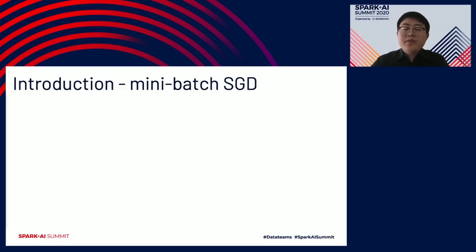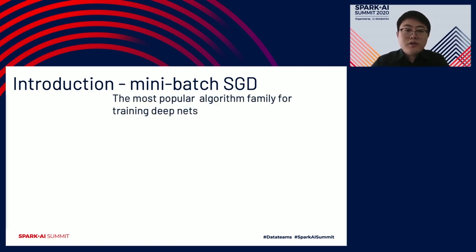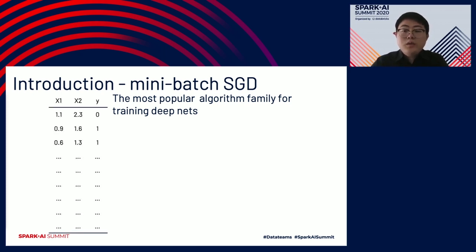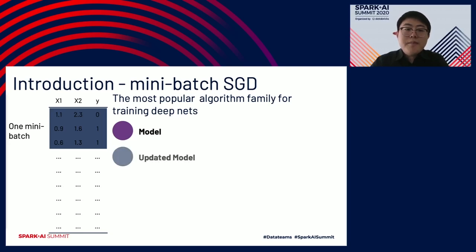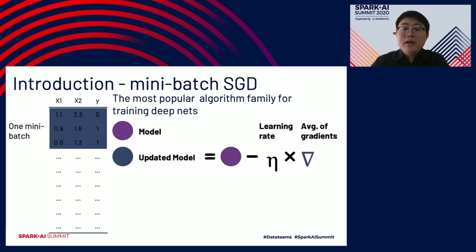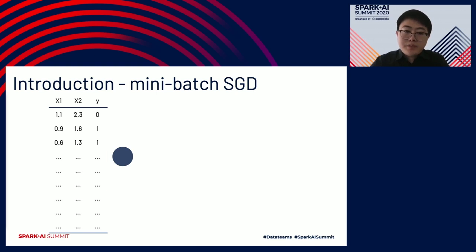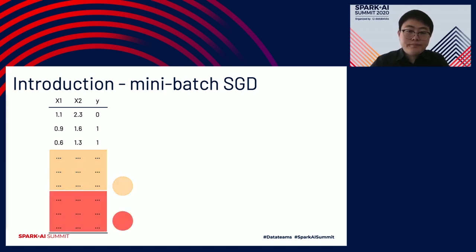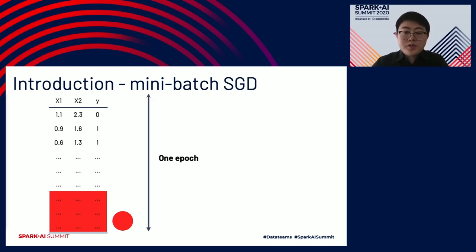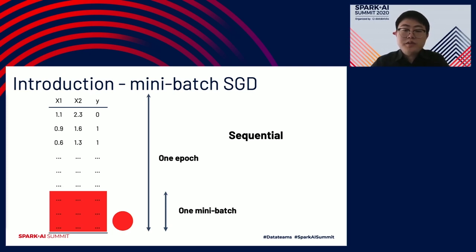The most popular choice of training algorithm is Minibatch SGD. It works as follows. You have your dataset — nine rows, three columns. The algorithm first batches some rows of your data and updates your model based on the gradients calculated from this minibatch. Then it takes another minibatch and updates again and again. In the end, your model has visited all data, and this is called one epoch. The whole training process usually takes multiple epochs before the model finally converges. This is the core data access pattern of Minibatch SGD, and this process is inherently sequential.